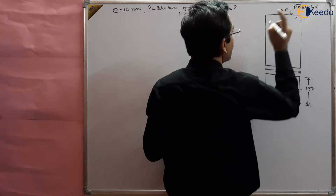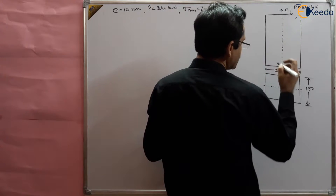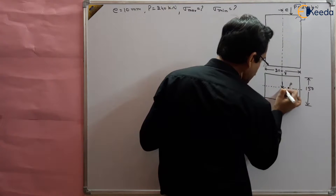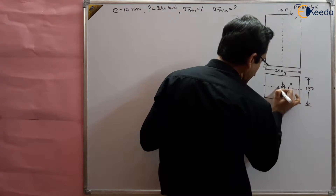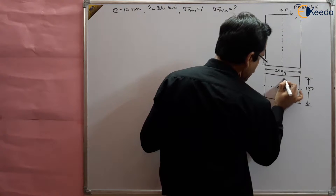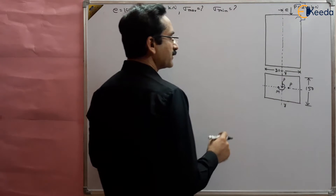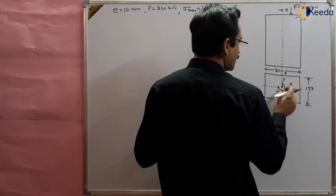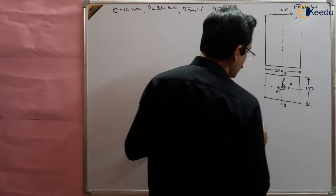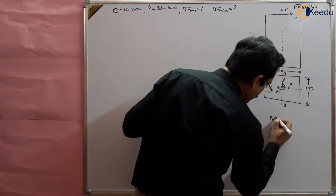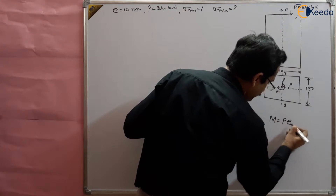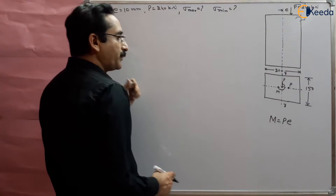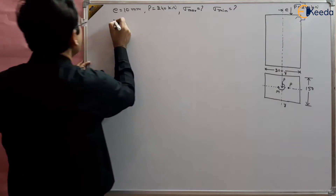The eccentric load P can be converted into two parts: a direct load P applied at the axis, plus a bending moment M. So two types of loads are there — one is a direct load given by P, and another is a bending moment given by M = P × E, where E is the eccentricity.